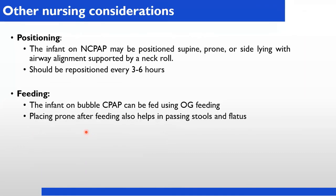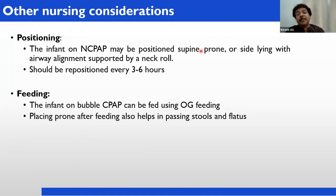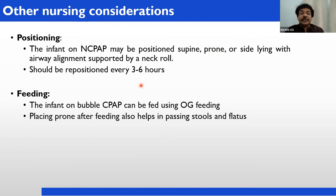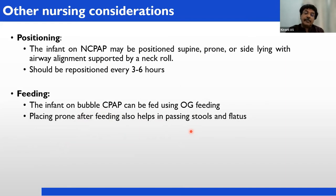Nursing considerations: positioning — infant on nasal CPAP may be positioned supine, prone, or side-lying with airway aligned and supported by a neck roll. Reposition every 3 to 6 hours. Feeding — infants on bubble CPAP can be fed with orogastric feeds; placing prone after feeding also helps with passing stools and flatus.